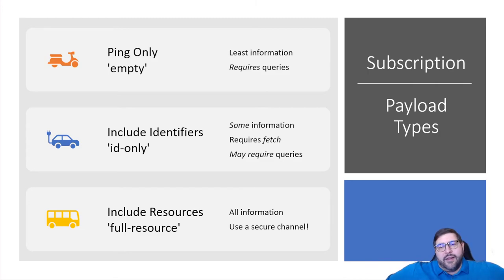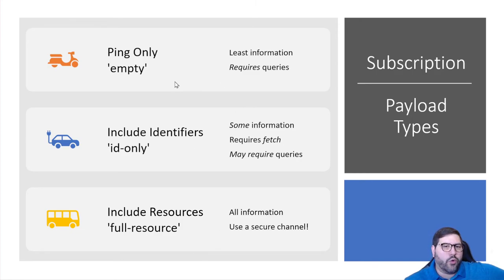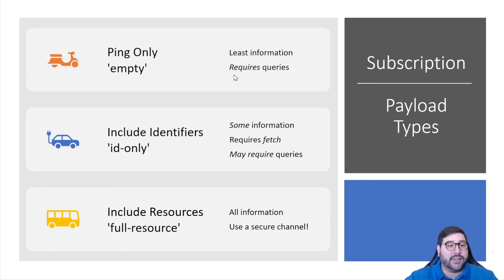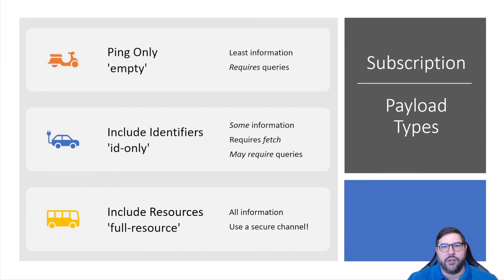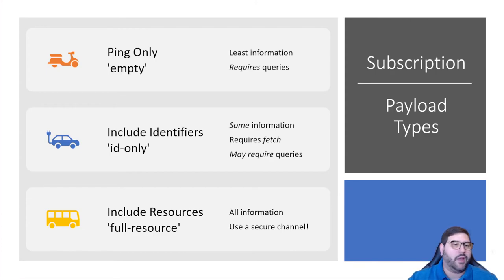What do you actually send? This is the payload types. We defined three categories: empty, ID-only, and full resource. Empty is the least information — the client has to query. If you just send 'something happened,' the client doesn't know what happened and has to query your server. It's really just a way of poking the client to say 'now is when you run your query' — instead of constantly asking 'is there something new?', you wait till the server tells you and then you ask.